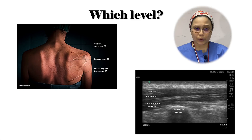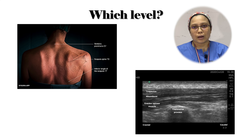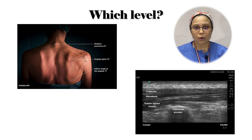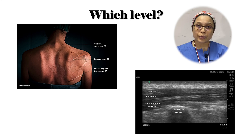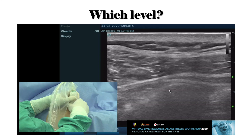To determine which level we are at, there are a few methods. We can use anatomical landmarks — the vertebral prominence corresponds to C7, so we count down from C7 to reach T5 or T3 or whichever level we want to inject. Alternatively, since the rhomboid ends at T5, we can count upward or downward from T5. We can also do real-time rib or transverse process counting. This technique is demonstrated in a video from last year's Virtual Life Regional Workshop, showing how to calculate transverse process levels in real-time.